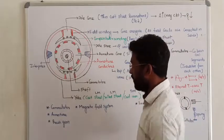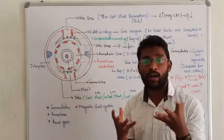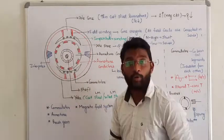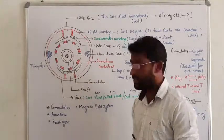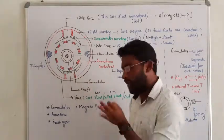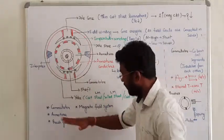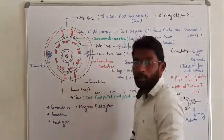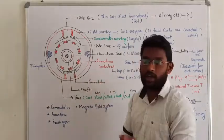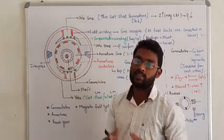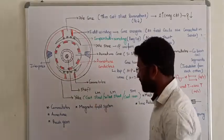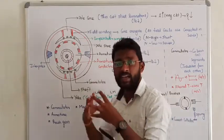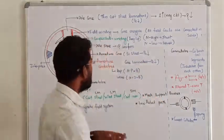So in the DC machine, first of all we need to discuss about armature winding — that is the heart of the DC machine. Next we need to talk about the commutator, which plays a vital role in DC machine. We also need to talk about brush gear, and then there is one more special arrangement on the stator side that is called the magnetic field system.